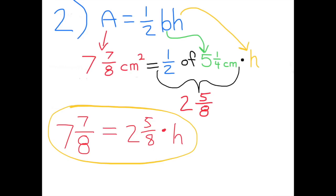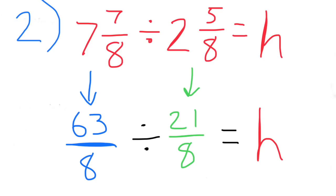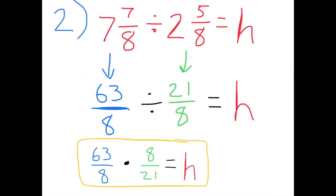The area of 7 7/8 is equal to 2 5/8 times height. The area 7 7/8 can be represented as 63/8, and the base 2 5/8 can be represented as 21/8. 63/8 divided by 21/8 will equal the height. To find that answer, we'll multiply by the reciprocal of 21/8: 63/8 times 8/21 will equal the height. And 63/8 times 8/21 equals 3.